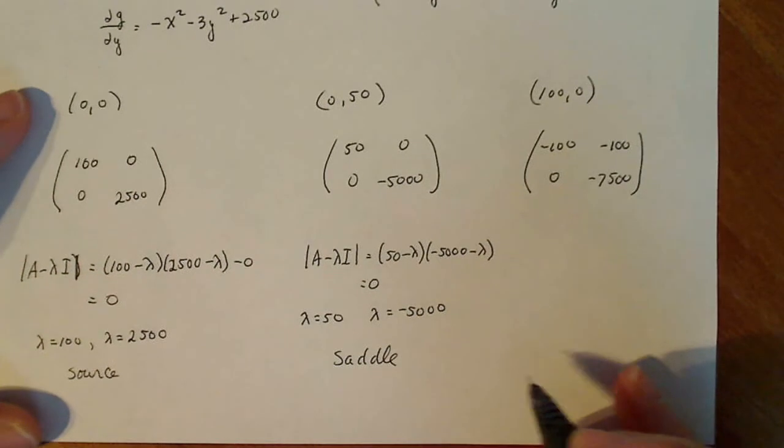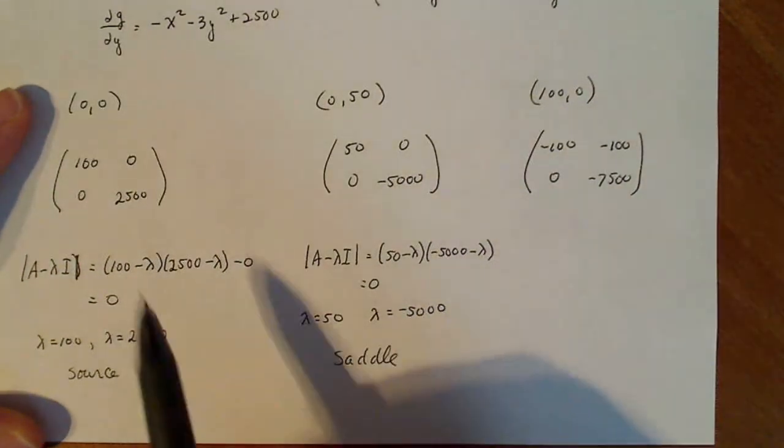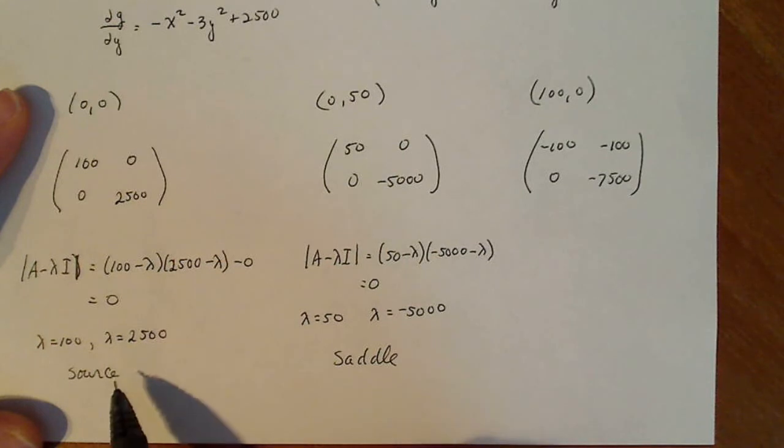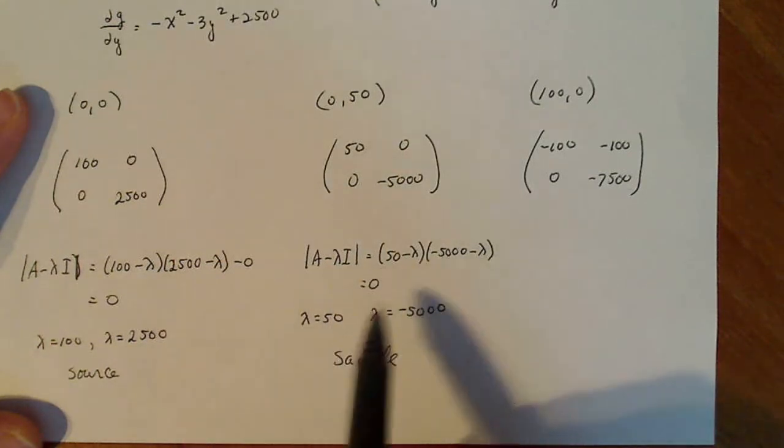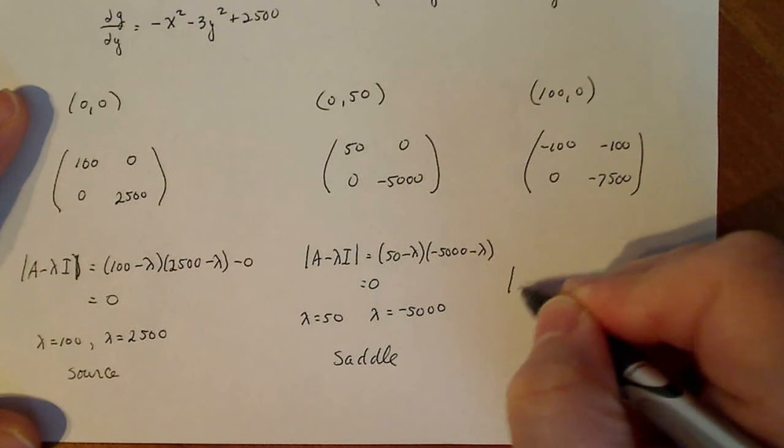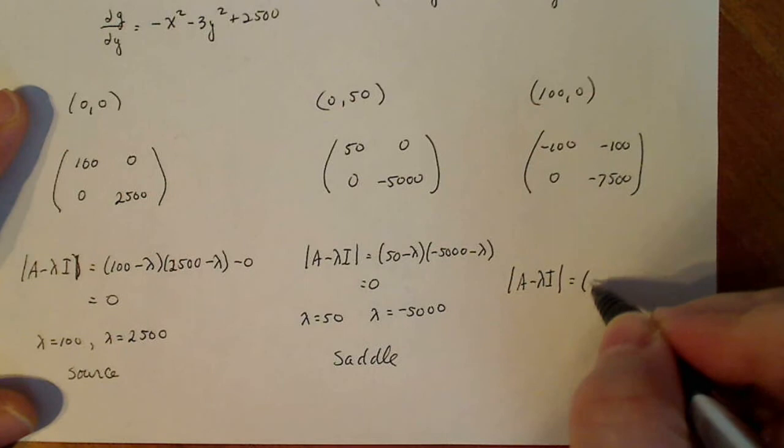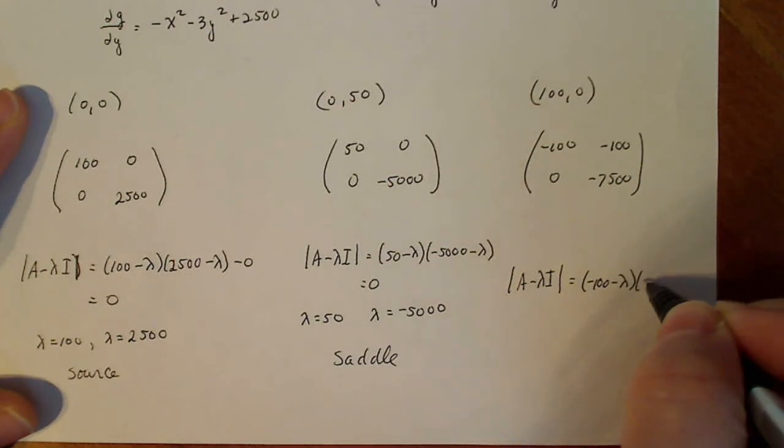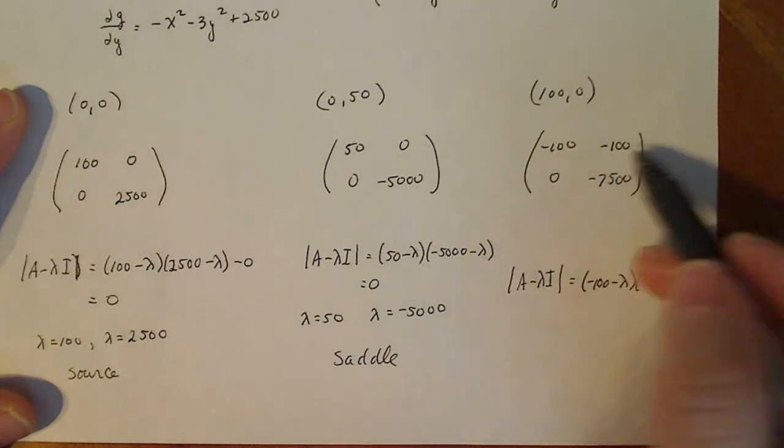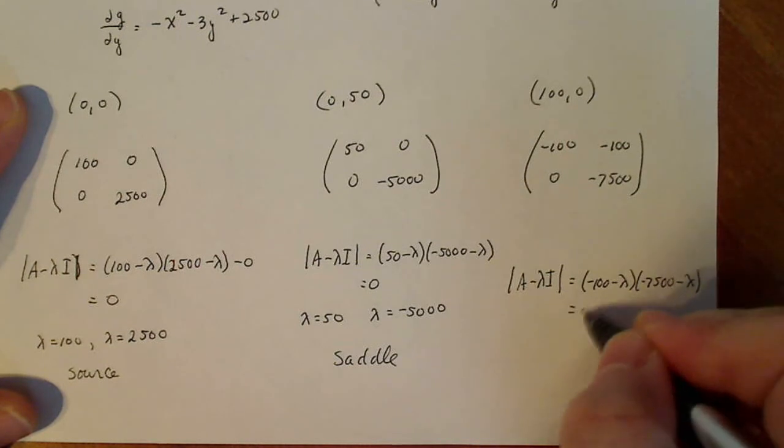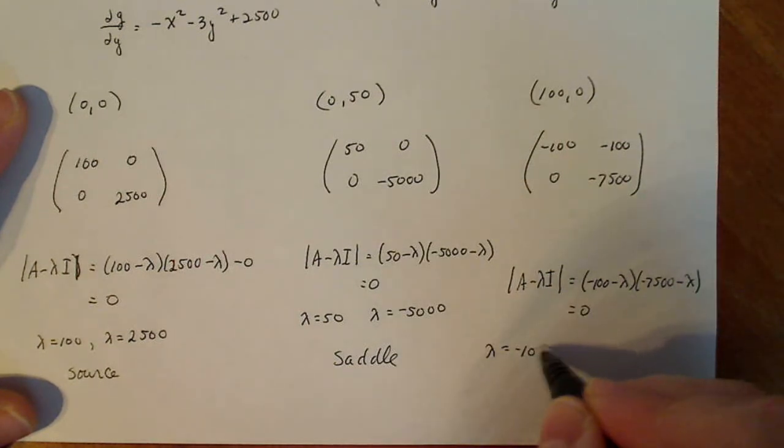Sorry. Sometimes I don't look back at the screen fast enough. So my lambdas, that's a source. That guy, my lambdas, gives me a saddle. And this guy, A minus lambda I. This is probably the most interesting of all of them. Minus 100 minus lambda times minus 7,500 minus lambda. But that's still 0 in that case, so this is all I got. And that's supposed to equal 0. So lambda equals minus 100. Lambda equals minus 7,500. And so this is a sink.